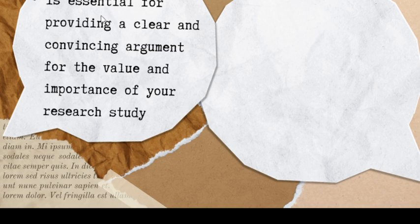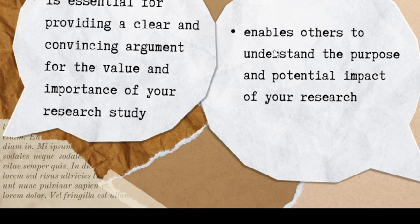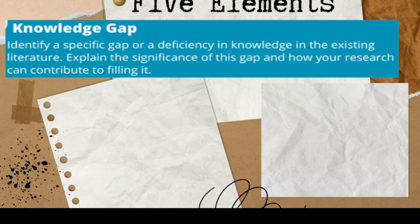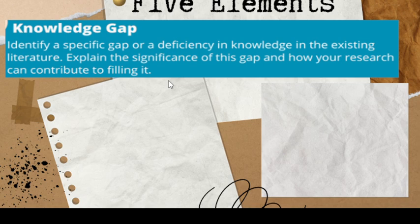Still about rationale — it is essential for providing a clear and convincing argument for the value and importance of your research study. It also enables others to understand the purpose and potential impact of your research. We have here five elements in the content of your rationale. First is the knowledge gap: you identify a specific gap or deficiency in knowledge in the existing literature, then explain the significance of this gap and how your research can contribute to filling it.